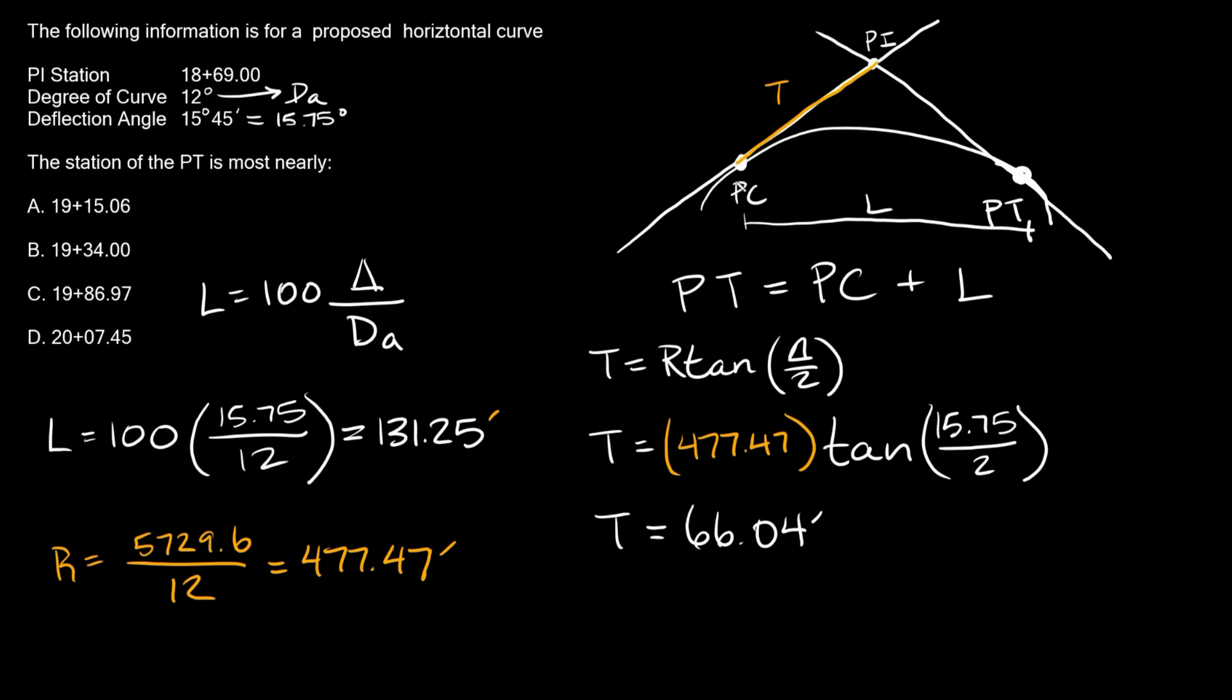So if we want to find the station of the PC, all we have to do is start with the PI, which is 1869. So we're going to say 1869 minus this distance, minus T.